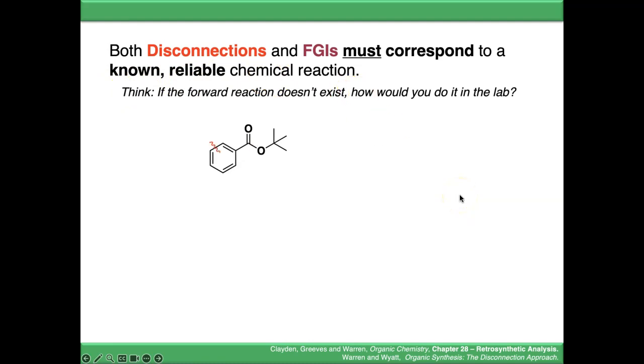If we take the same molecule and decide we want to disconnect over here, what chemical reactions do we know that can form a carbon-carbon bond in a benzene ring? Probably not many. That's not a reliable disconnection. You have to think, when I'm disconnecting or doing a functional group interconversion, does the corresponding forward reaction actually exist?